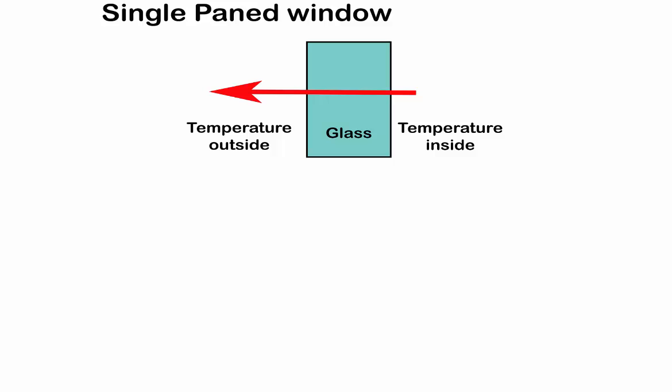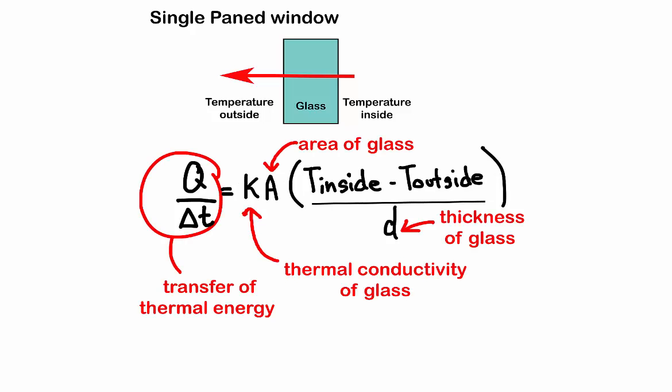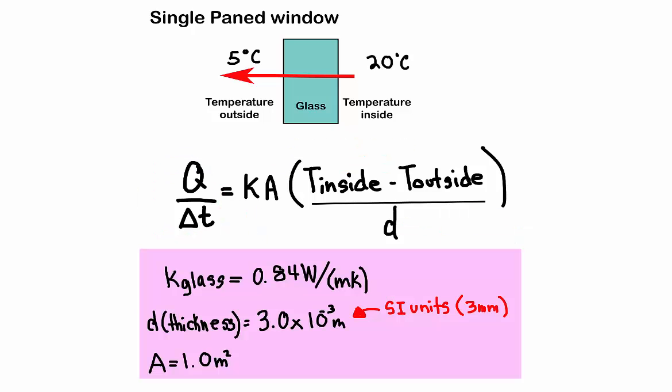So let's look at that single-pane window first. Because we said that there isn't much resistance to heat loss, we can use the heat conduction formula as seen in your textbook. So Q over delta T indicates the transfer of thermal energy, A is the area of the window, D is the thickness of the glass, and K is the thermal conductivity of the glass. Let's use some realistic values and calculate the heat loss through a window with an area of 1 meter square and a glass thickness of 3 millimeters.